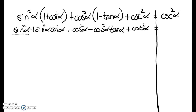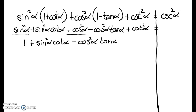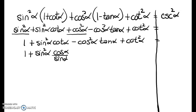One of the things I notice is sine squared alpha plus cosine squared alpha. They're not next to each other, but we can always rearrange these terms like we can in an algebraic expression. I know that sine squared plus cosine squared is 1, so I'm going to change this to 1. I know cotangent is cosine over sine, and tangent is sine over cosine.